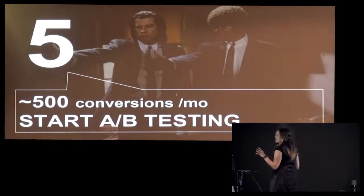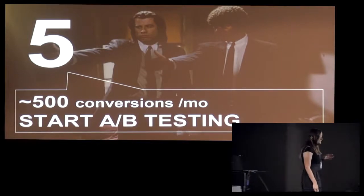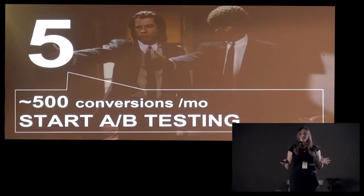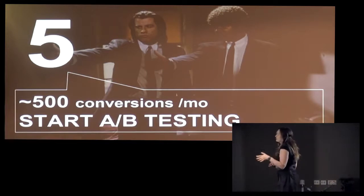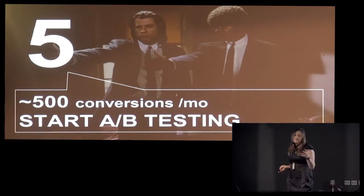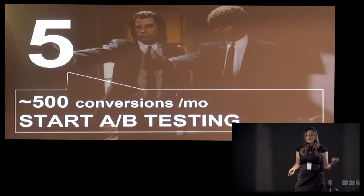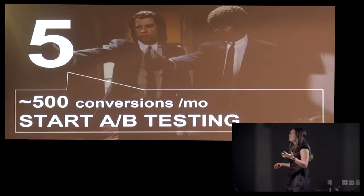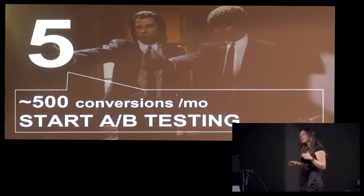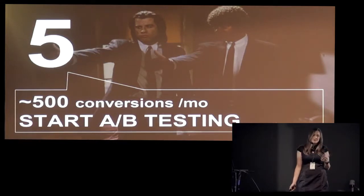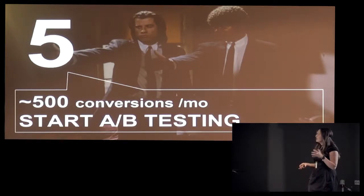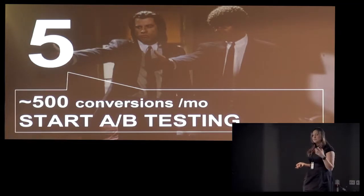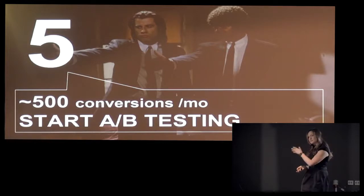Now let's say you've done all of that — collected the low-hanging fruit, set up measurement properly, done qualitative and quantitative research, and implemented everything you had enough proof for. Now you're approximately at 500 conversions a month. Why 500? Because that's the minimum to run at least one A/B test a month — you need 250 per variation, though that's a ballpark number. So start thinking about A/B testing and educating your company about it. Even when you start testing, it doesn't mean you'll always reach statistical significance or sufficient sample size — there are still problems you'll encounter.